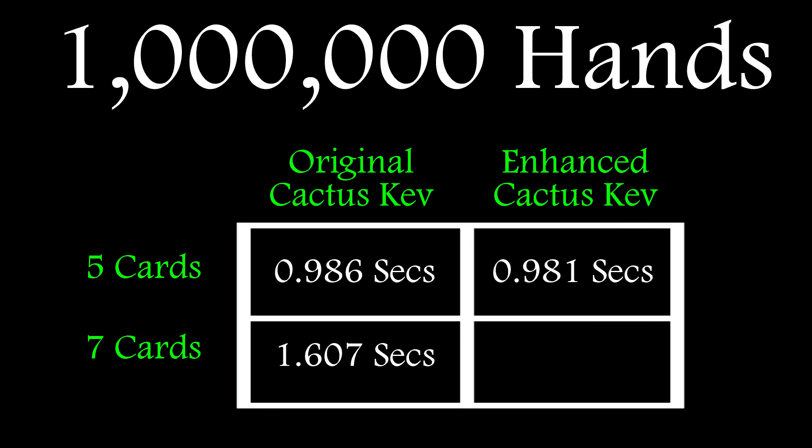Checking its speed, I don't see much improvement in the 5 card row, which is a clear indication that the original approach was already well optimized, but it makes a big dent in the 7 card non-optimized evaluator.